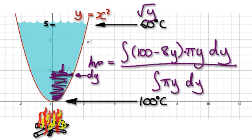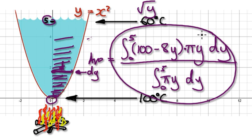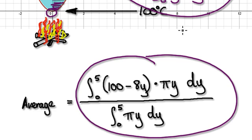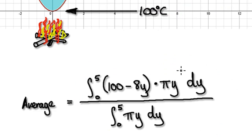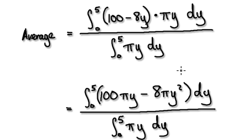The average would be this combination of temperature and volume. Now we need to divide by the volume, which would be π y dy. Somehow work out the volume — that would be given by the integral, and we are summing up all the dy's from 0 to 5. So the average temperature would be the integral from 0 to 5 of (100 − 8y) π y dy, divided by the integral from 0 to 5 of π y dy. Now it's just a matter of evaluating this.